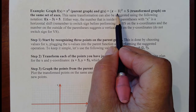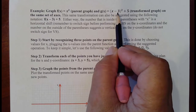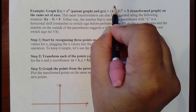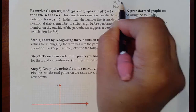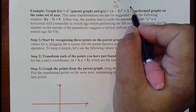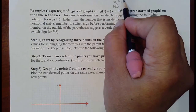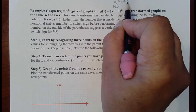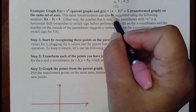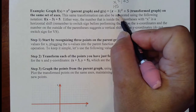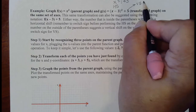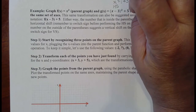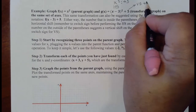Here we have the parent graph and the graph that we are trying to perform the transformations for. Notice that one number is with the X inside the grouping symbols — that's going to be our horizontal shift. Horizontal shifts are the ones where you switch the sign, so we'll use positive 3 on our X's. The number outside the grouping symbols is a vertical shift, and for vertical shifts we do not switch the sign, so we'll use positive 5 on our Y coordinates.